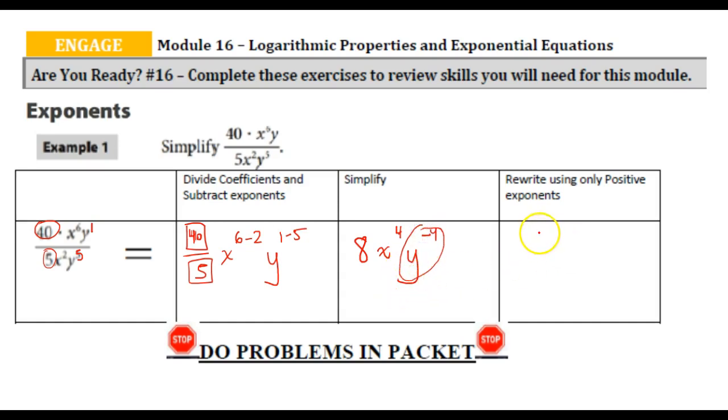And then x 6 take away 2? 4. And y 1 take away 5? Negative 4. And then it says rewrite using positive exponents. So remember if we write this as a positive exponent, essentially it's going to go in the denominator's place with a positive exponent of 4. Use this as an example, but just like it says here, stop and do the problems in your packet under exponents, Are You Ready number 16.